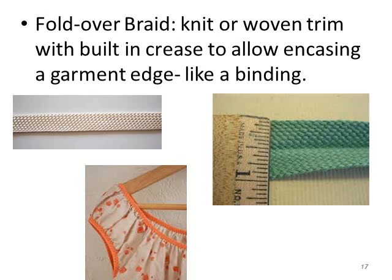The fold over braid is a knit or woven trim that has a permanent built-in crease, used as binding to finish an edge. On this dress you can see it finishes the neckline and armhole. When pressed open, there is a crease right in the center, and when closed it wraps the edge — so the fold over braid is used as a bound seam finish.